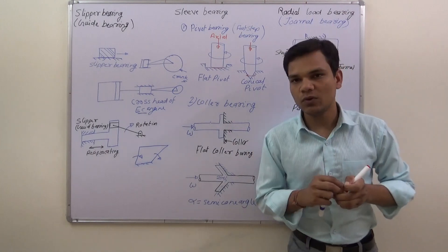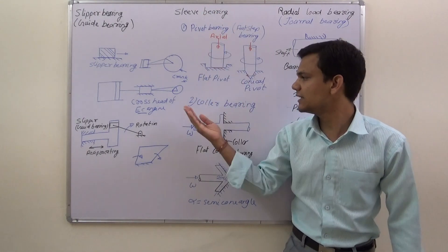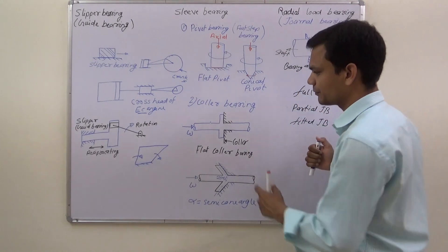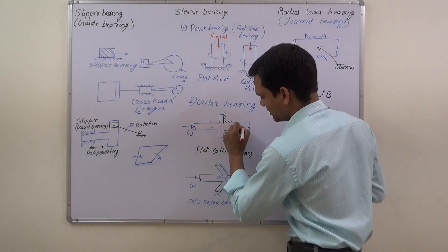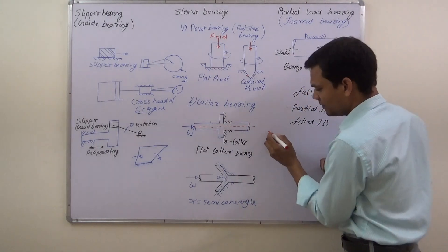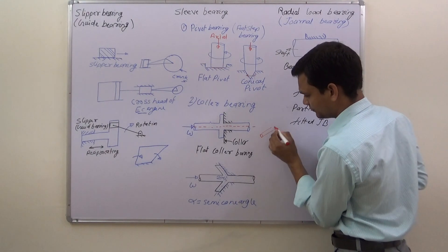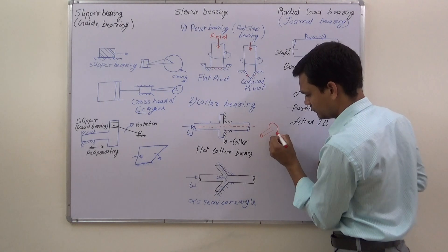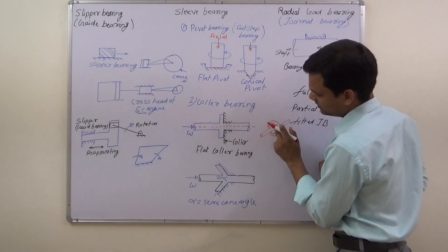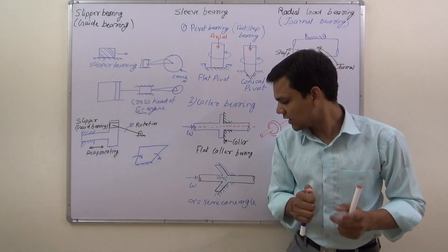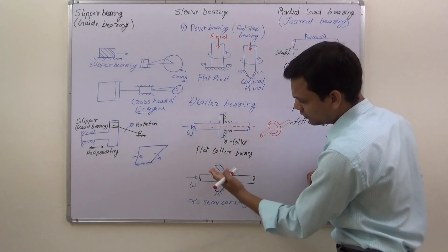There are two types of pivot bearing: the first one is flat pivot and the second one is conical pivot. The second type of slip bearing is collar bearing. These bearings also take axial load. In this bearing we use a collar — in a 3D view it appears as a collar shape. Collar bearings are also of two types: first is flat collar bearing and second is conical collar bearing.